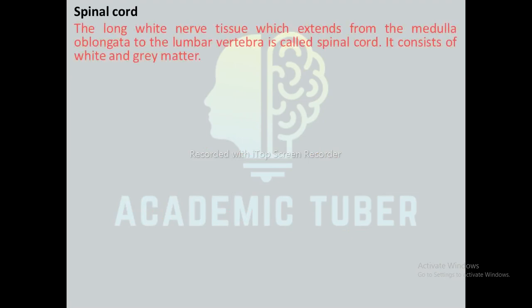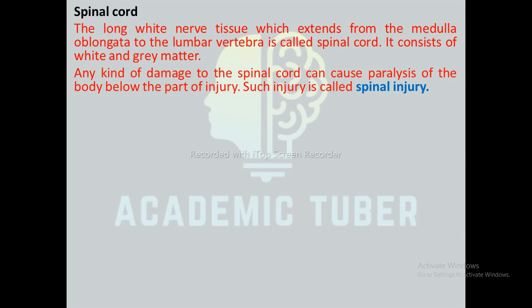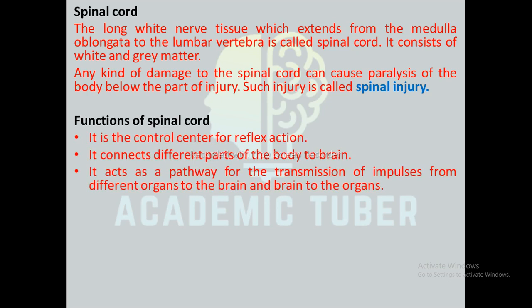The spinal cord is the long white knob-like tissue which extends from the medulla oblongata to the lumbar vertebrae. It consists of white and gray matter. Damage to the spinal cord can cause paralysis below the point of injury, known as spinal injury. Functions of the spinal cord: it is the control center for reflex action, connects body parts to the brain, and acts as a pathway for transmitting impulses between organs and the brain.